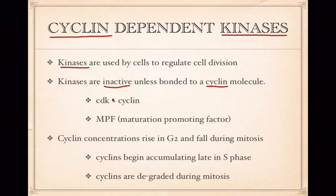When a cyclin-dependent kinase bonds to a cyclin, it becomes something called an MPF — a maturation-promoting factor. This MPF is a signal molecule that can cause a cell to go through the cell cycle. The kinase molecule has to bond to the cyclin in order to become active, so MPF is essentially the active form of the kinase molecule.